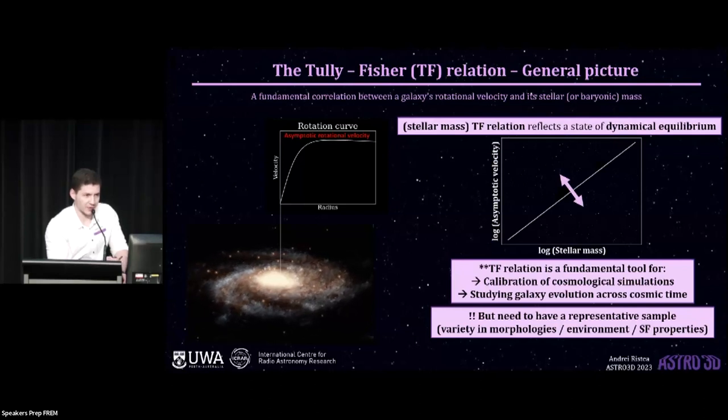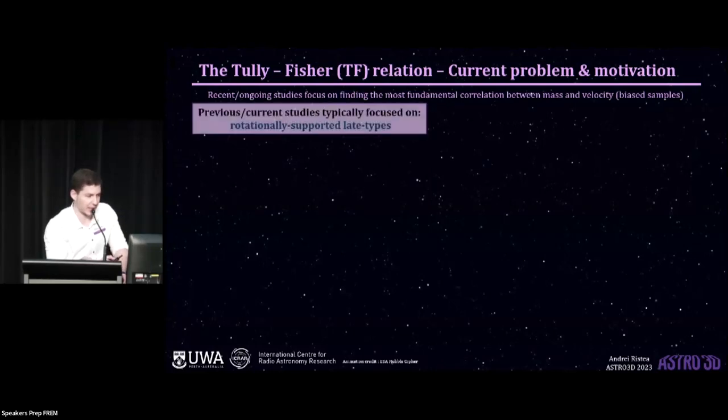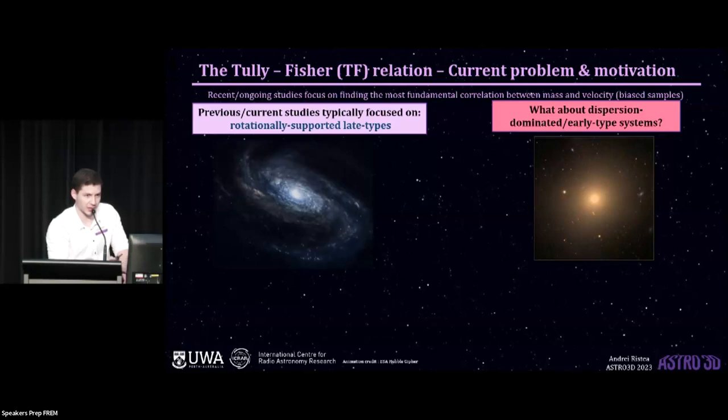Now, it's very important for both of these applications to have a representative sample of galaxies to compare to or to calibrate to. And this is something that my study has built up a bit upon, and I'll get to that in a second. Now, recent studies of the Tully-Fisher typically focus on finding the most fundamental correlation in the sense that they try to minimize the scatter between some measure of the mass and some measure of the velocity. And in doing that, they typically focus on selecting rotationally supported spiral galaxies, such as this one, whereas earlier type more dispersion-dominated systems are neglected, regardless of whether or not the stars and gas in these galaxies have any degree of rotation.